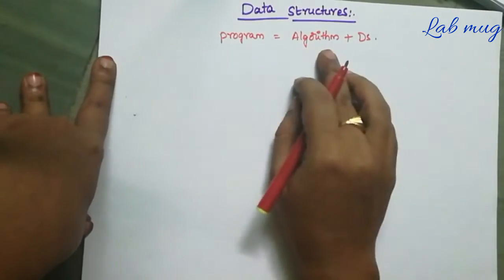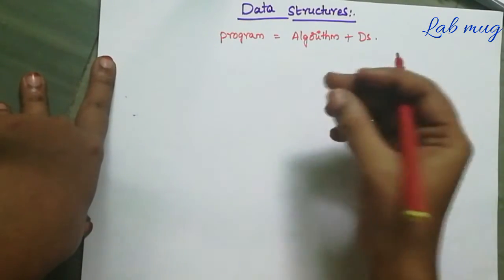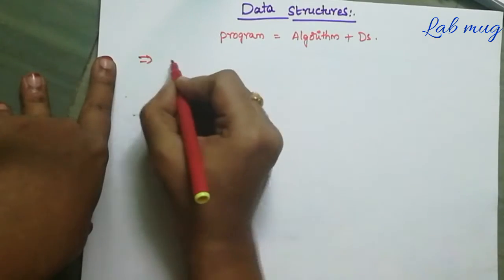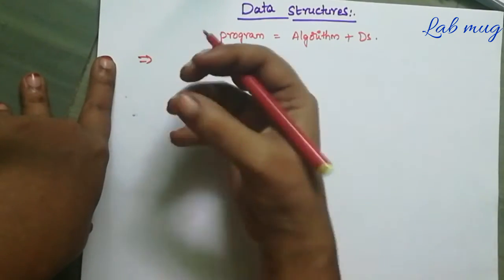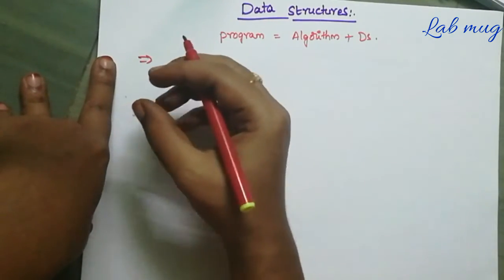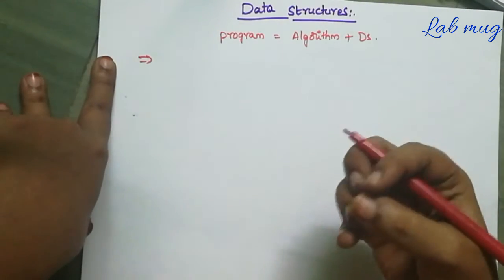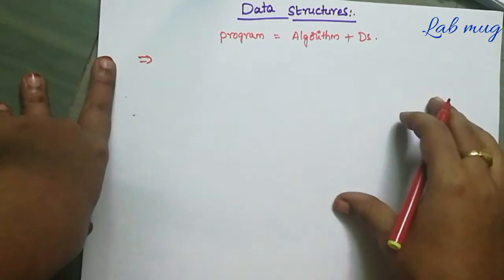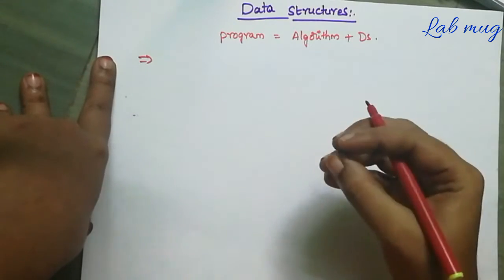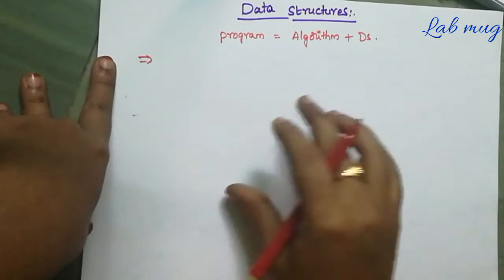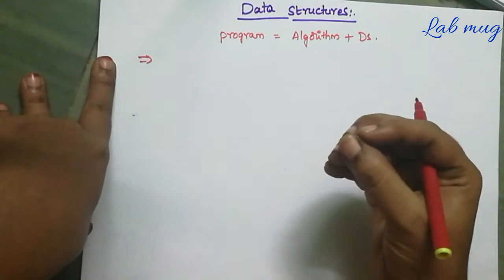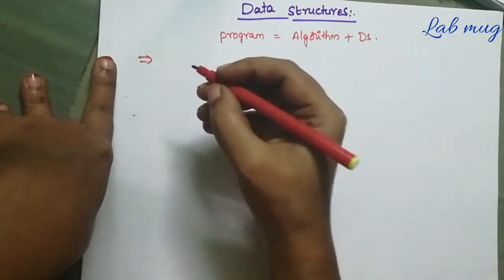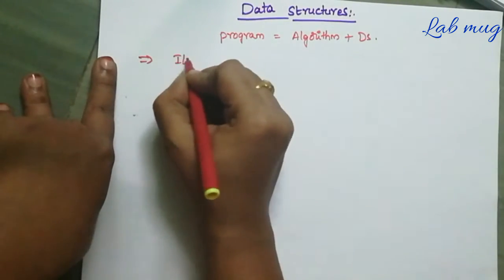So first of all, what is Algorithm? Algorithm anandtei general ga oka basic identification onthundi. Algorithm means it is a Step-by-Step Process. Manam chese programming ni manakei understandable language loo, each and every step ni neetiga step-by-step manu explain chayetam jaruthunni. It is a Finite Sequence of Instructions.